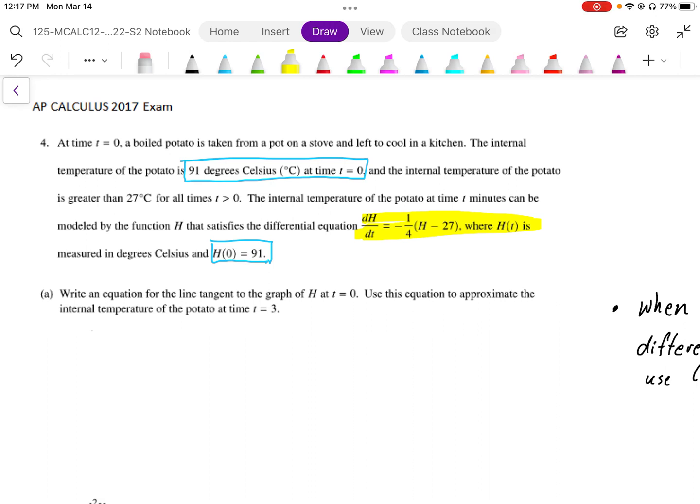We want to find a tangent line and use this tangent line to approximate the temperature at t equals 3. So we need to find a tangent line at t equals 0, which means we want the slope at t equals 0.